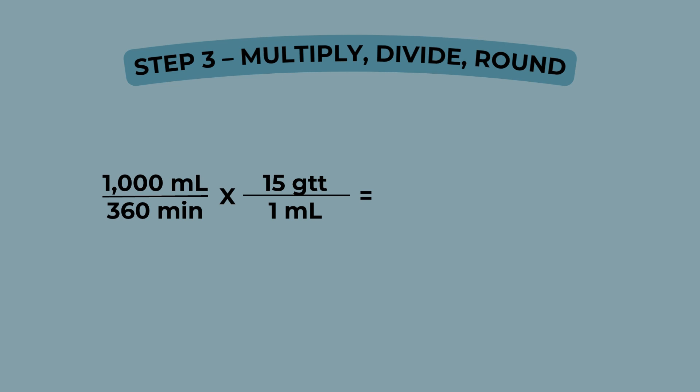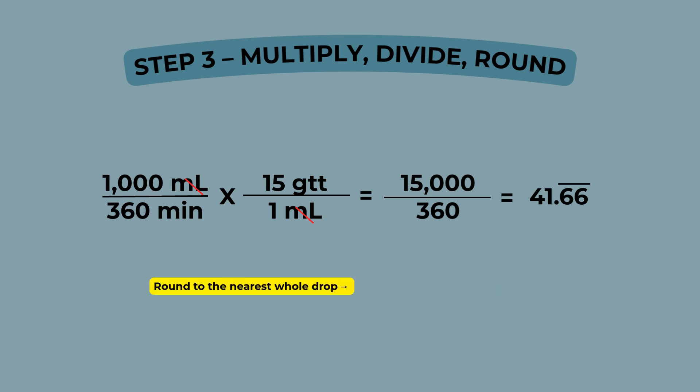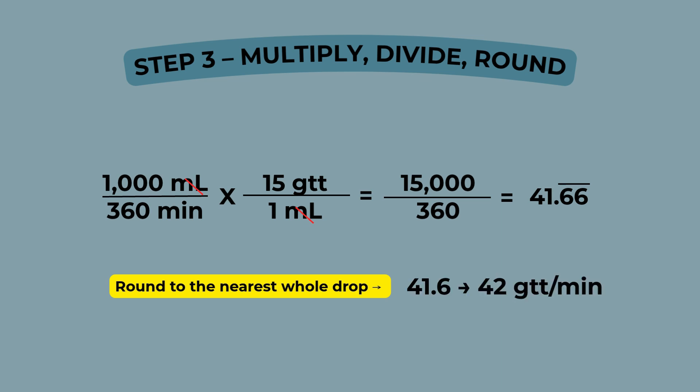Let's solve it. Our setup is one thousand milliliters over 360 minutes times 15 drops over one milliliter. Start by canceling out milliliters. Now multiply across the top, then multiply across the bottom, then divide. 15,000 divided by 360 equals 41.6 repeating. Since you can't give a fraction of a drop, we round to the nearest whole number. Final answer: 42 drops per minute.